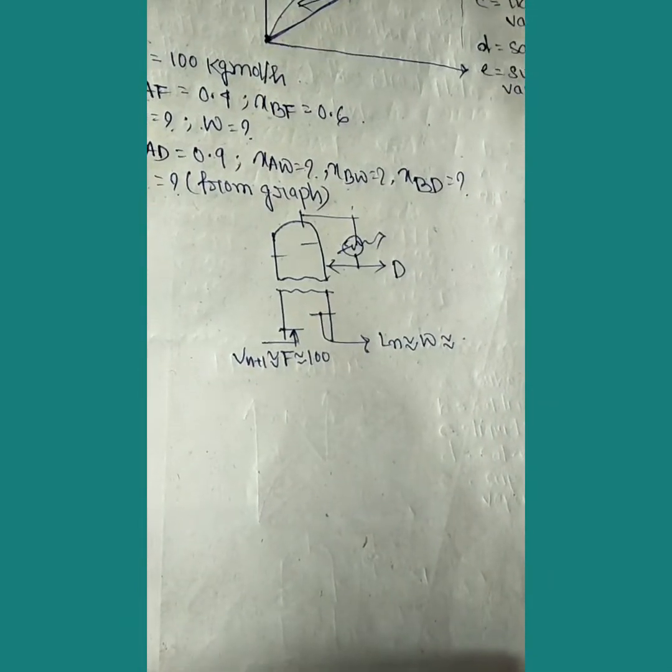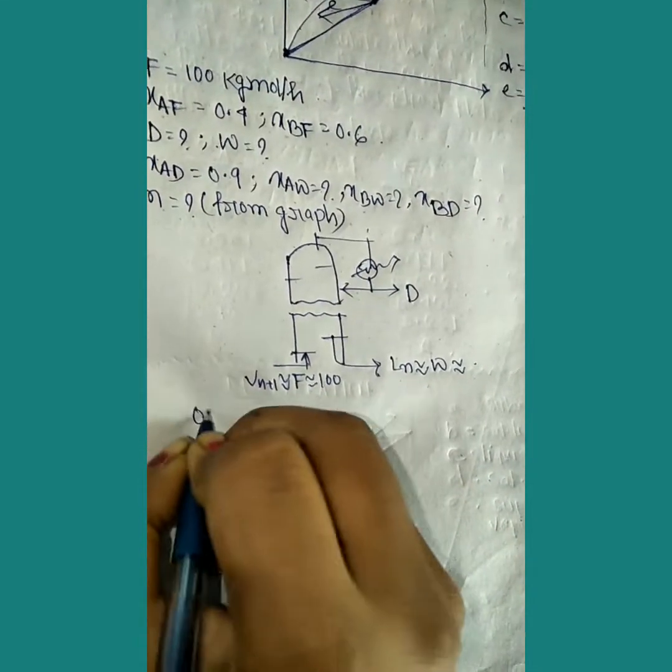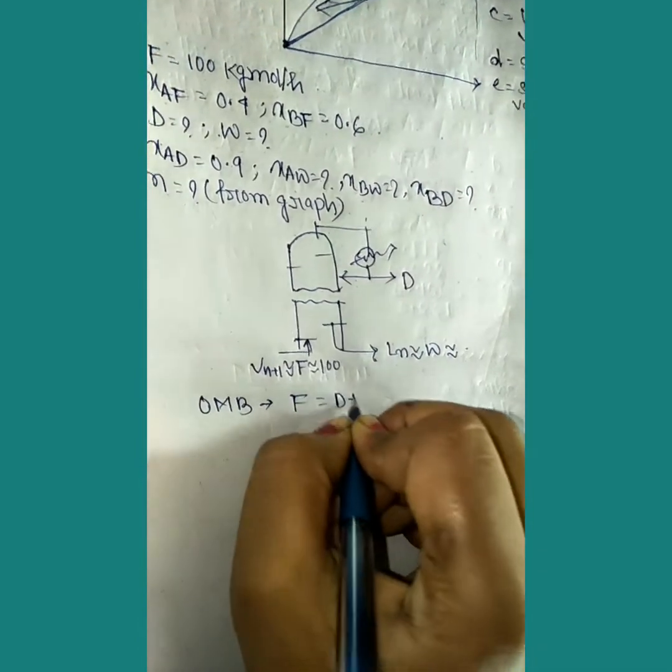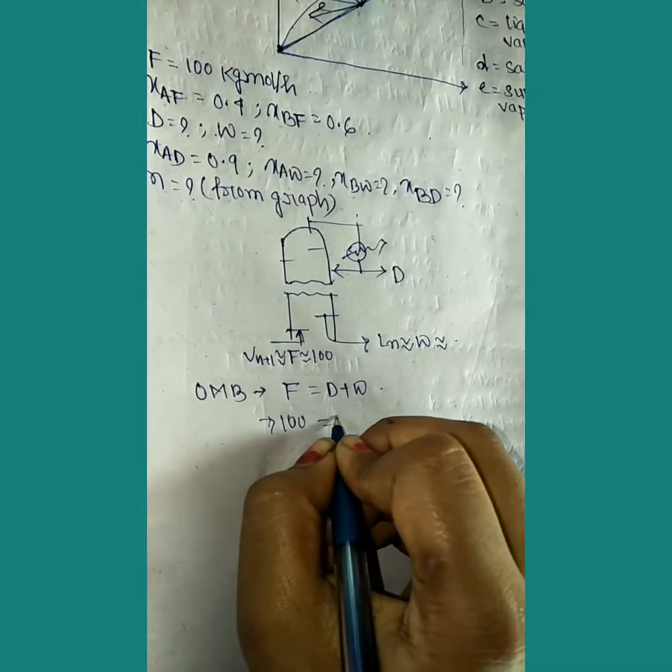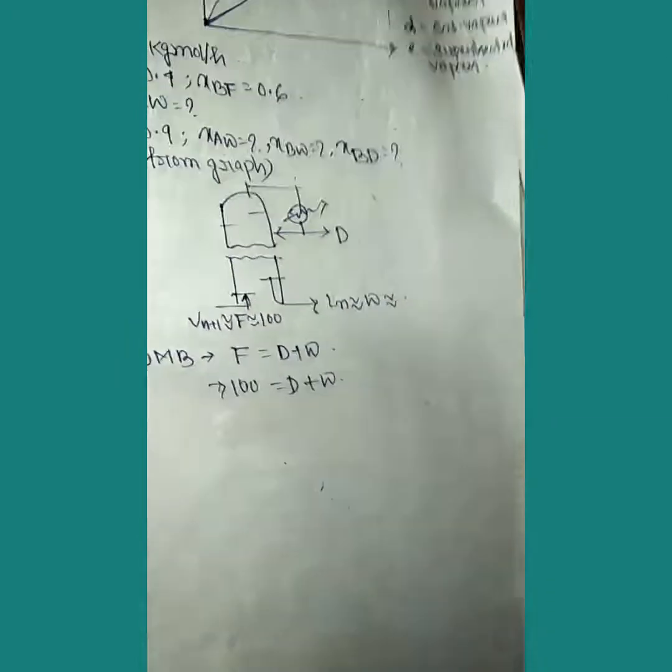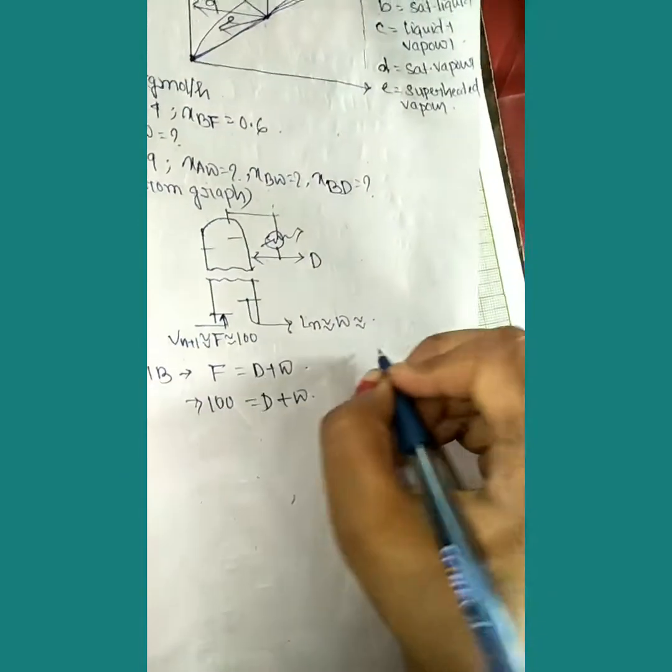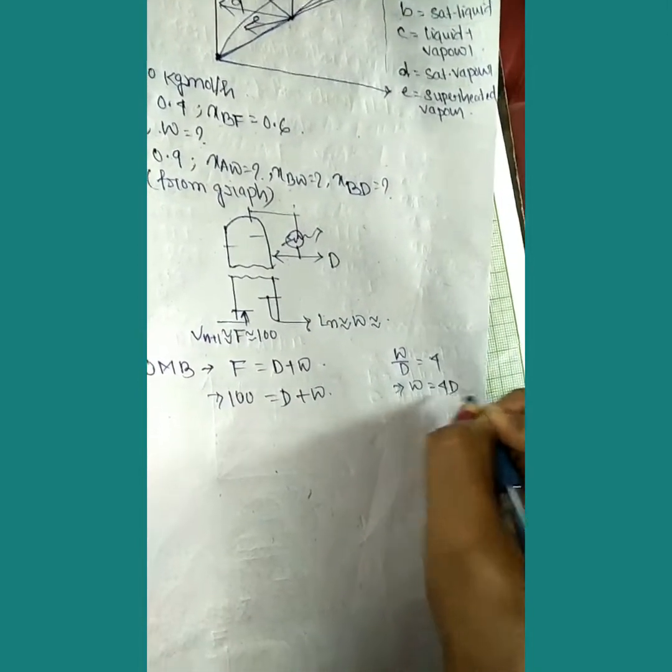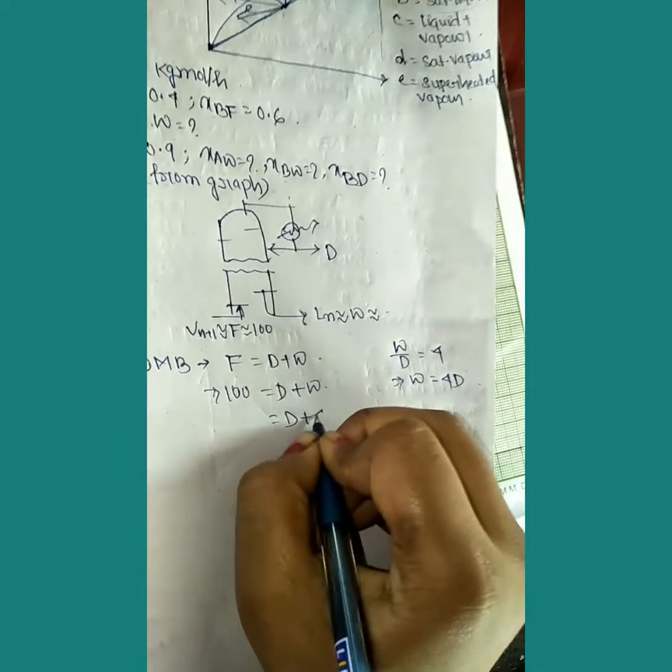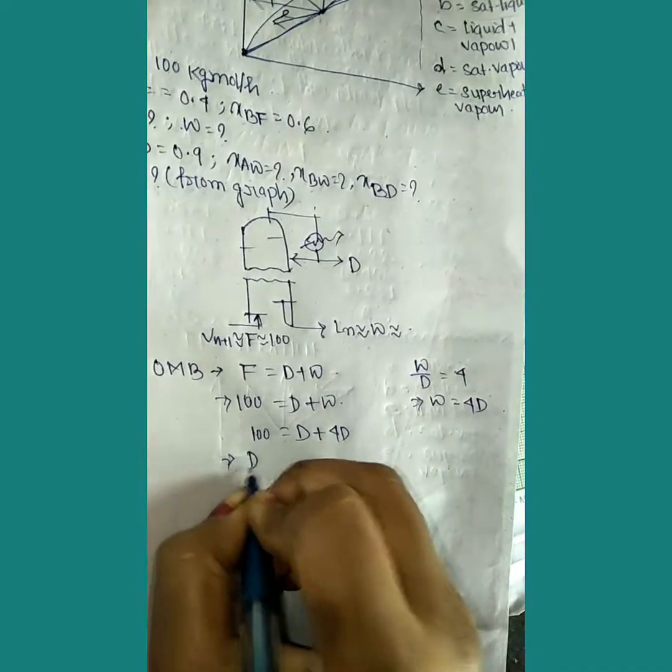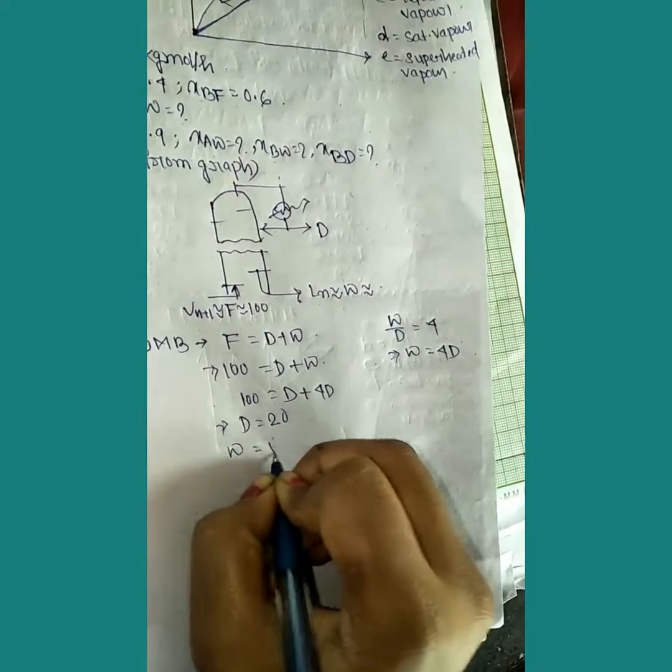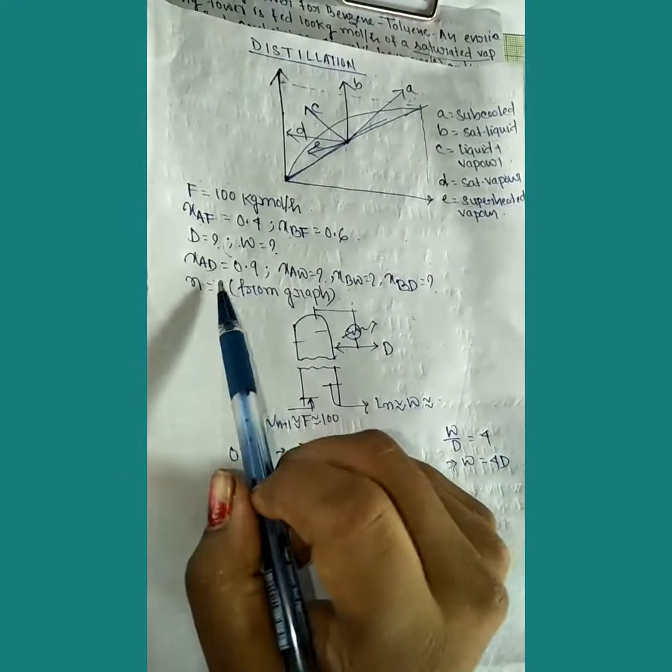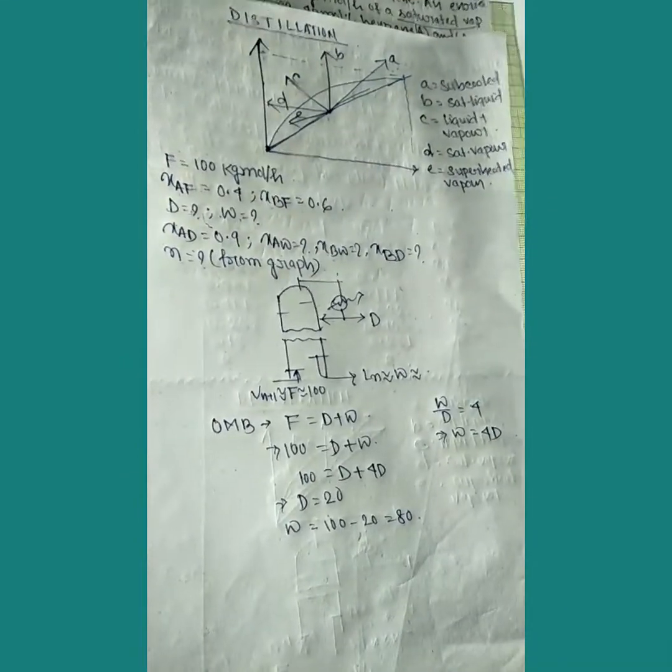Starting with overall material balance: F equals D plus W. It's given that F is 100, D is unknown, W is unknown. The reflux ratio is given as 4. W by D equals 4, so W equals 4D. Substituting: 100 equals 5D, so D equals 20 and W equals 100 minus 20 equals 80. We've got W and D.